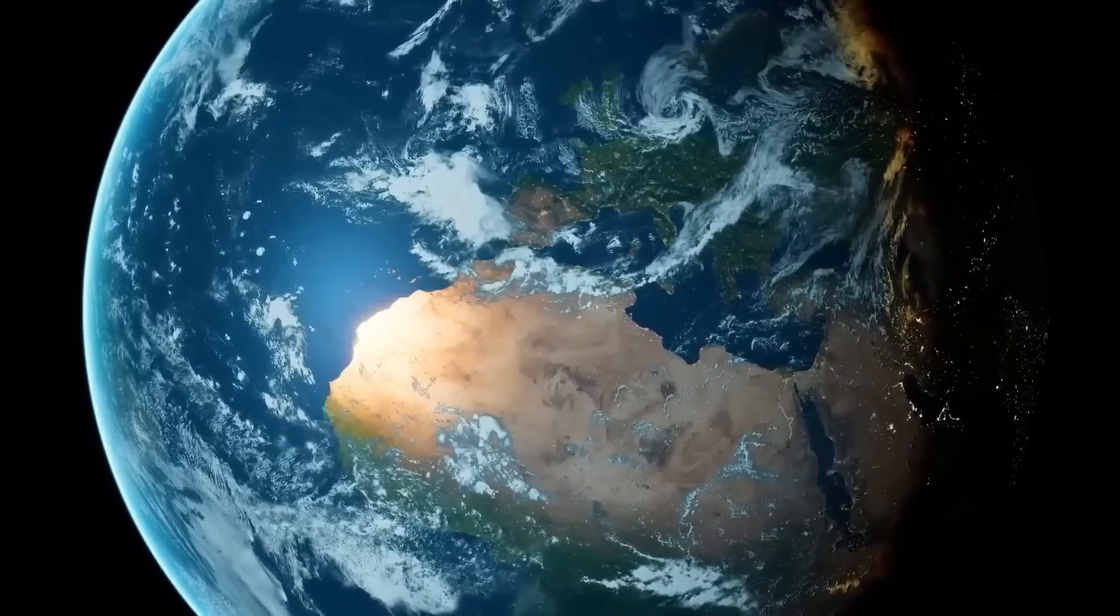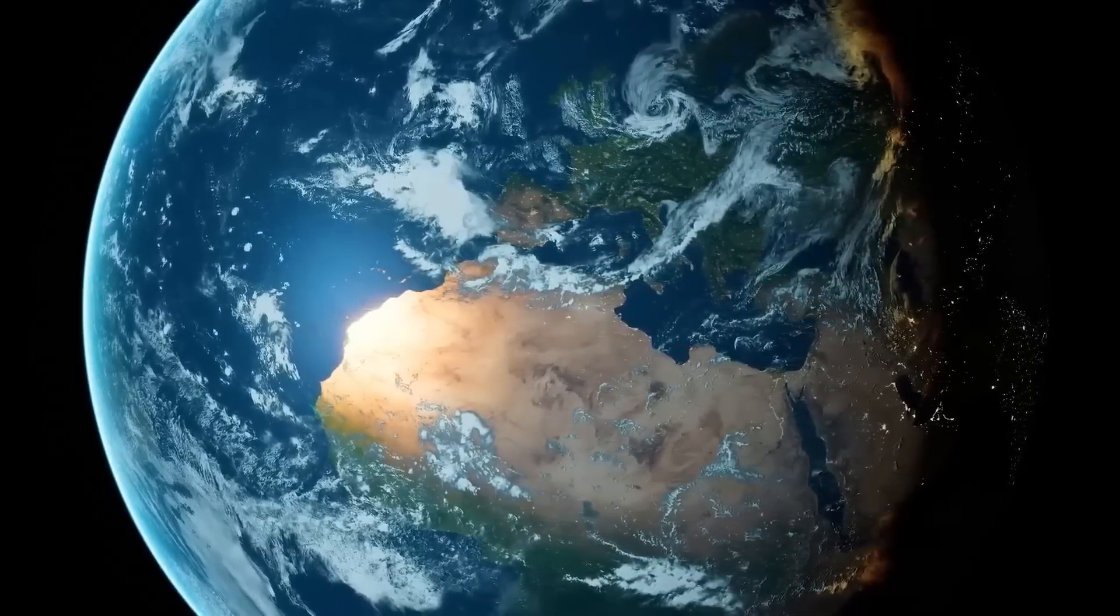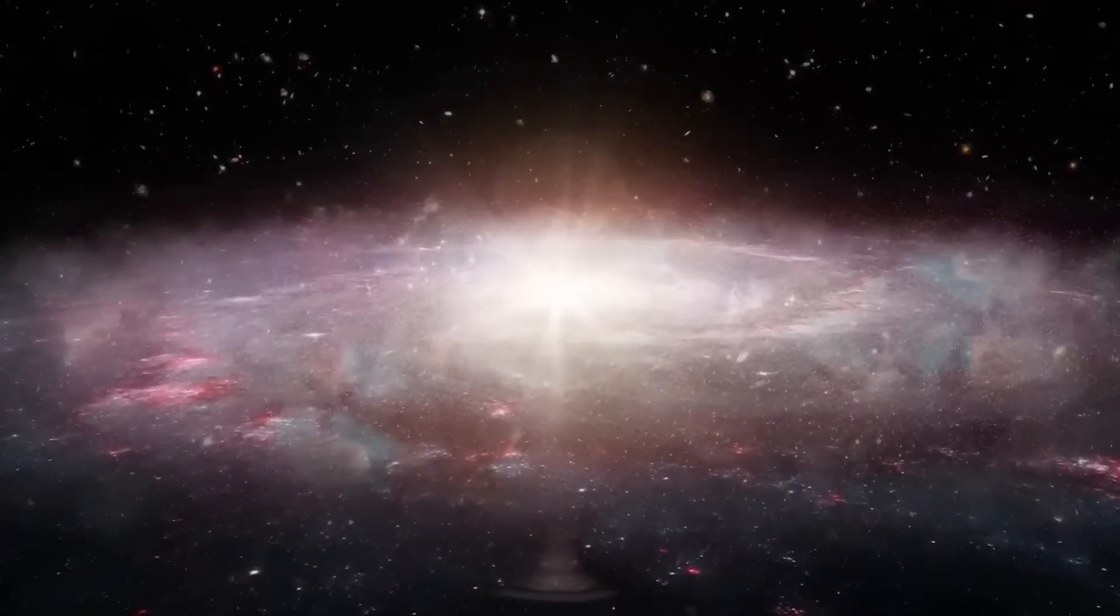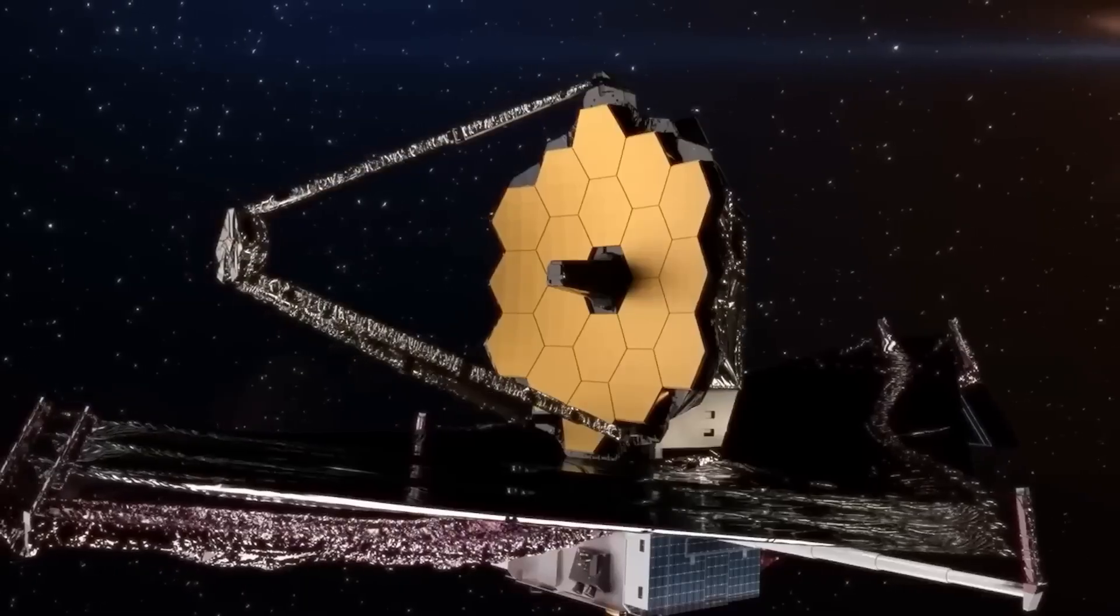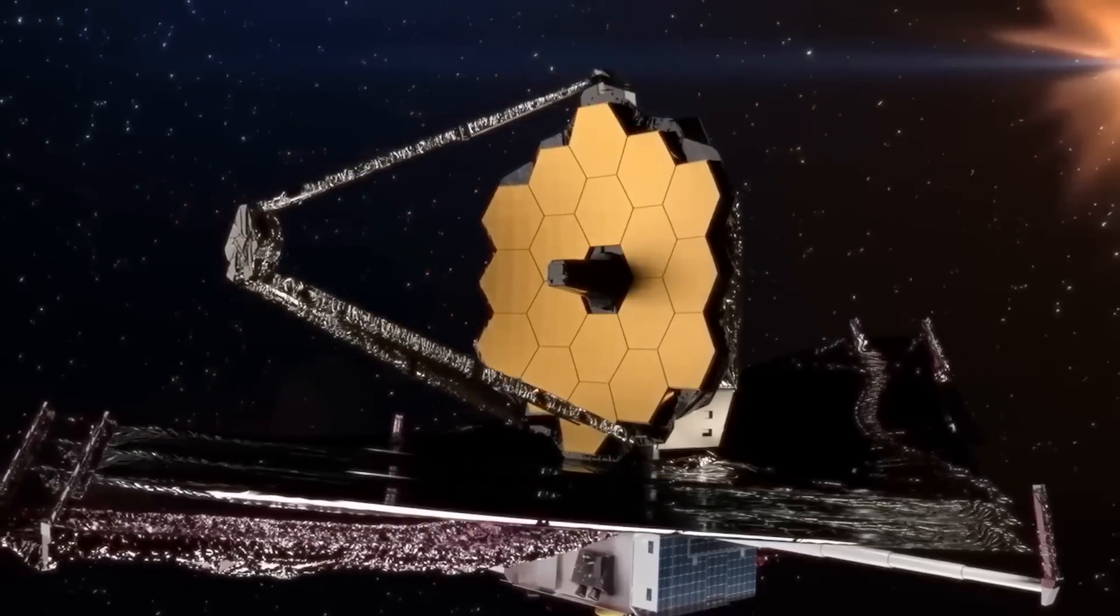To grasp the immense scale of even our own solar system, consider this. If we traveled at a constant speed of 70 miles per hour, it would take about 15 days to complete a single lap around Earth's equator.